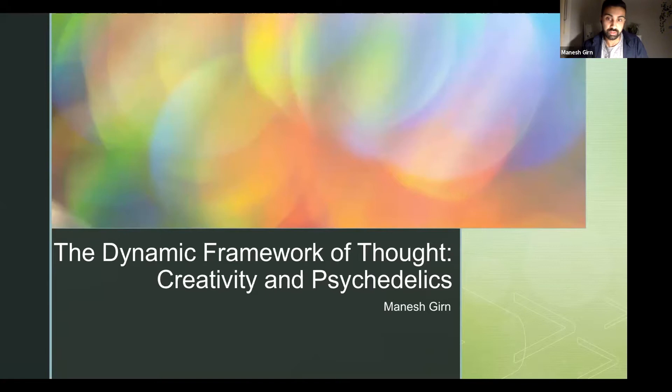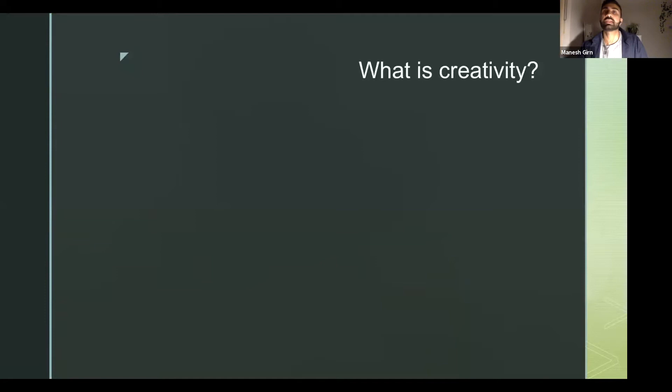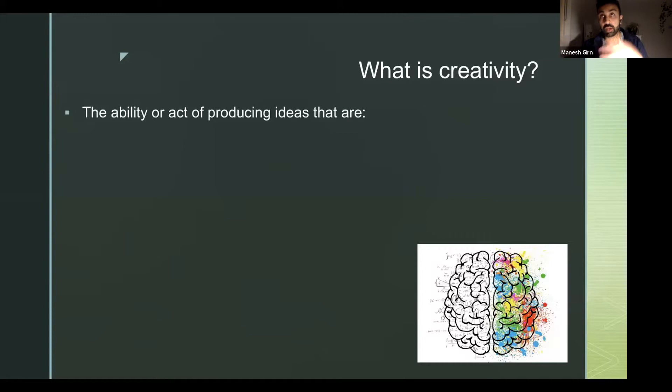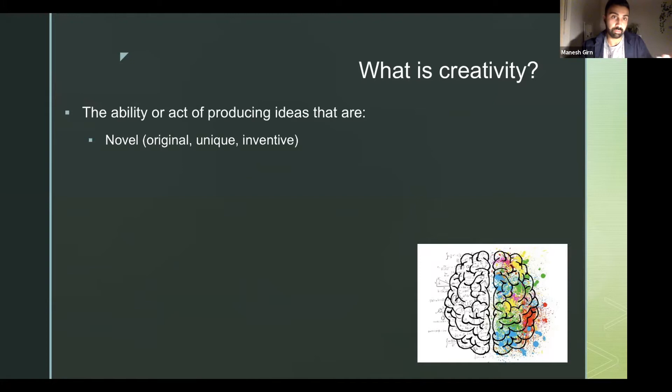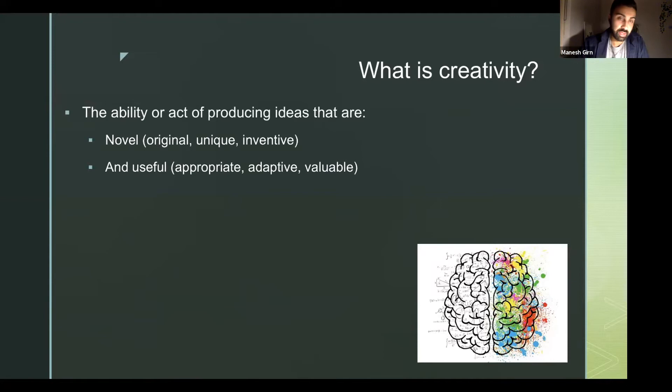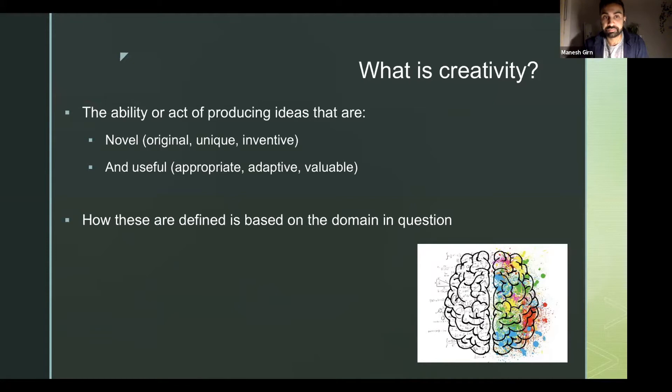So first, what is creativity? How do scientists usually operationalize creativity? The typical definition is that there are two components of what constitutes creativity or a creative output: it has to be novel — aka original, unique, or inventive — and also useful, meaning appropriate, adaptive, or valuable. If something is deemed to have both of these aspects, then it's considered a creative output.